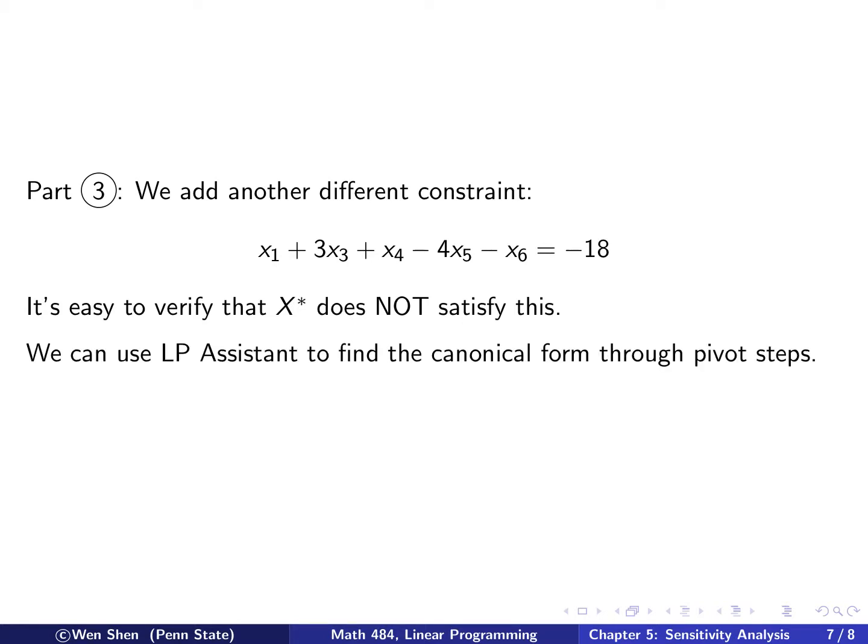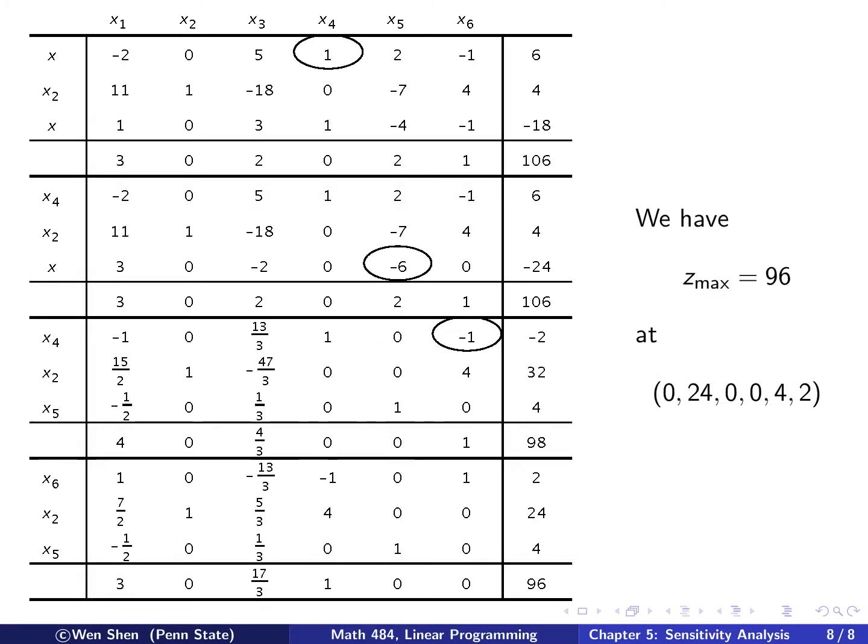And now we will take advantage of the LP assistant. Because we noticed that we had to do all these manipulations to put the problem in canonical form before we could apply the dual simplex algorithm. And what we did there is, in principle, just some kind of a pivot step. So we will directly use the LP assistant to find the canonical form through pivot steps.